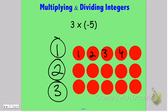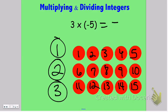So then I can very easily count them all, one, two, three, four, five, and so on and so forth, and I see that I end up with a negative 15.